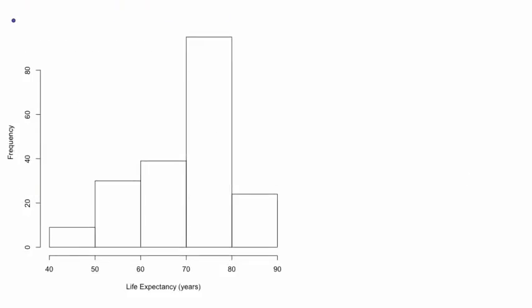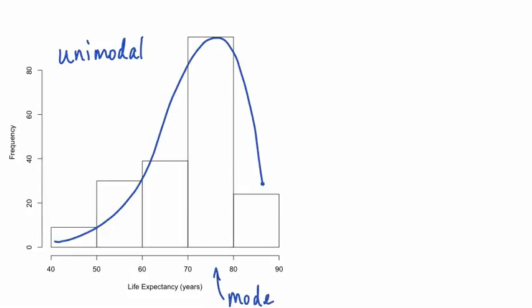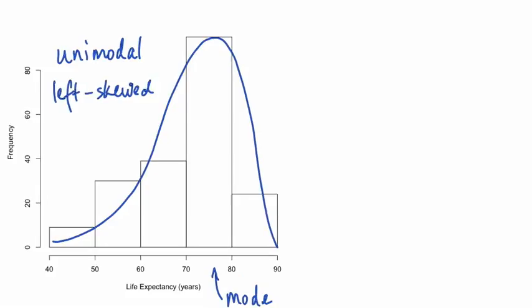Let's go back now and describe the life expectancy data from its histogram. There is one peak, so the distribution is unimodal. The mode is between 70 and 80 years. There is a much longer left tail than right tail, so the distribution is left skewed. And there are no outliers.